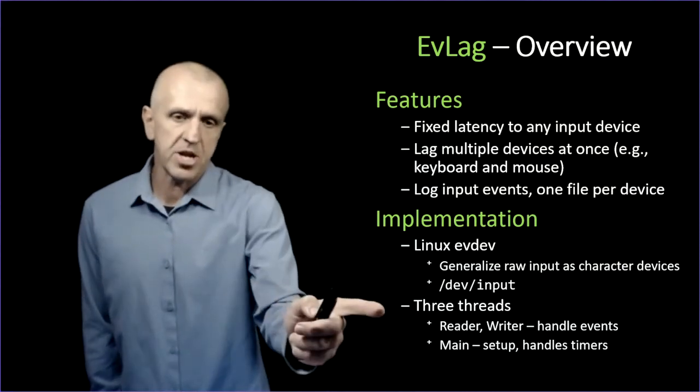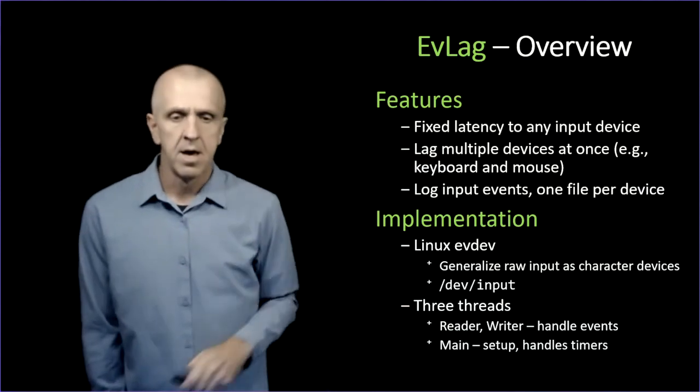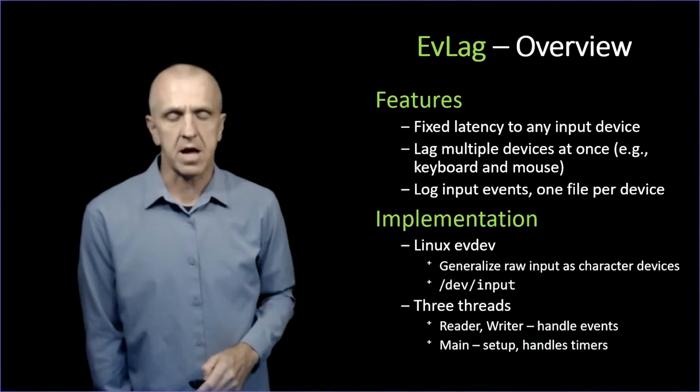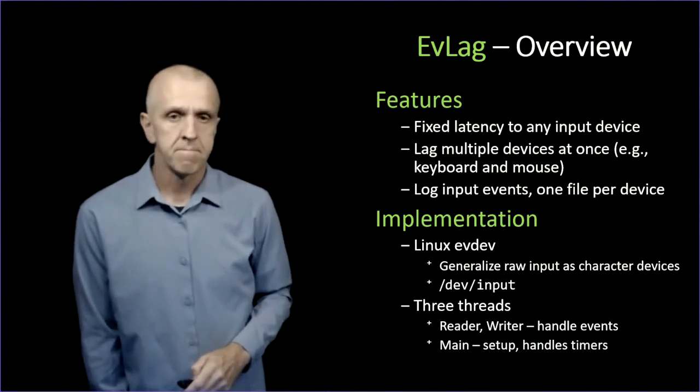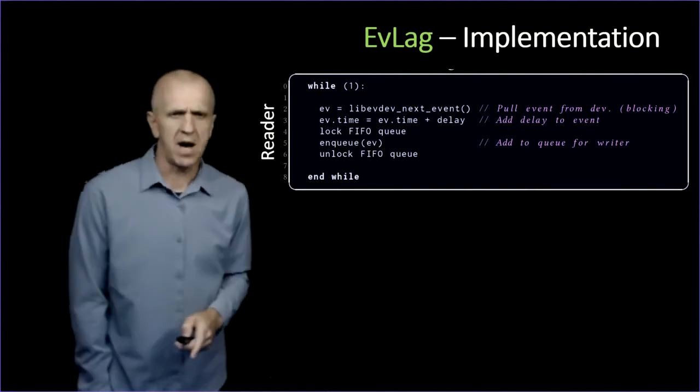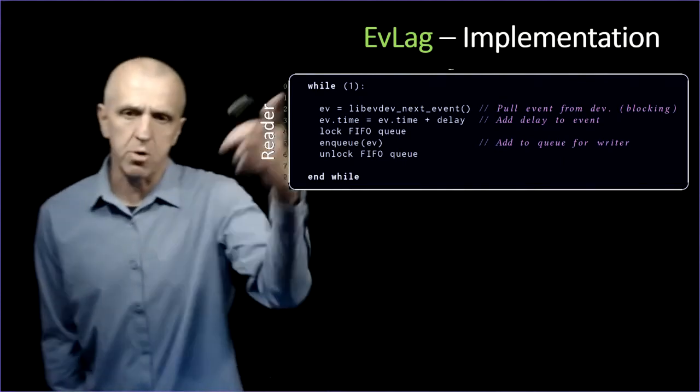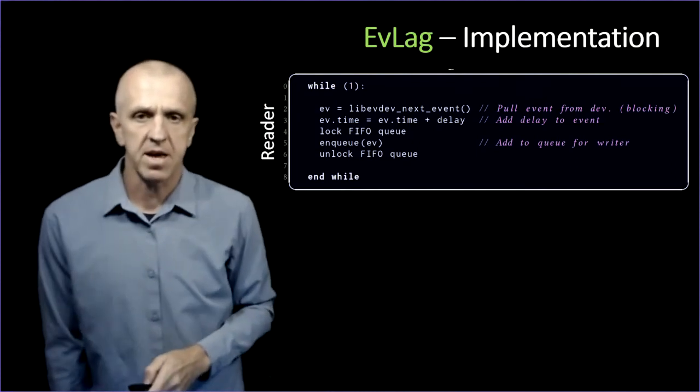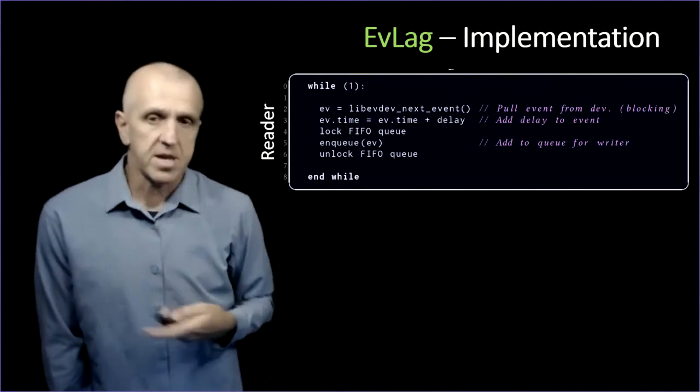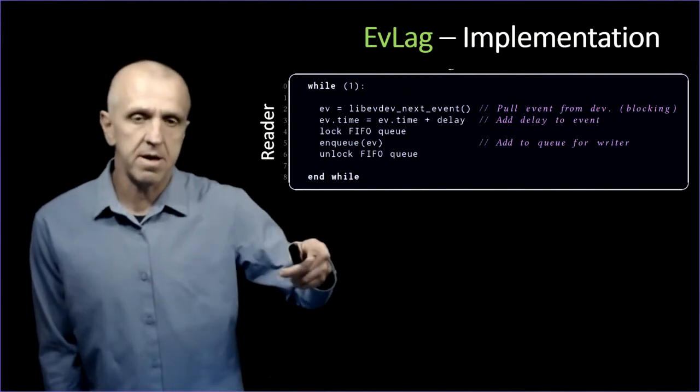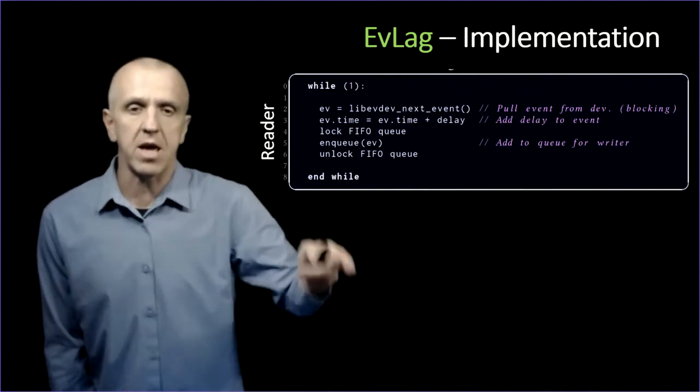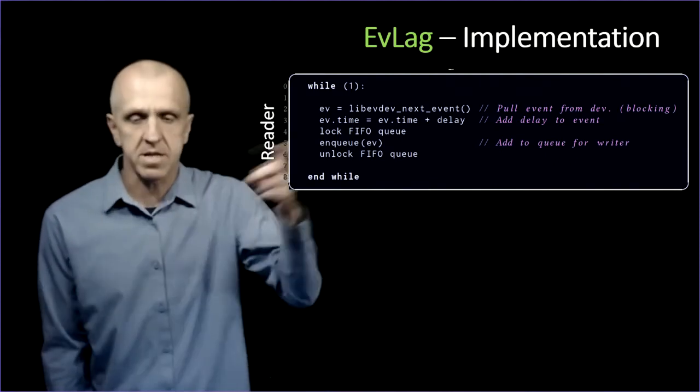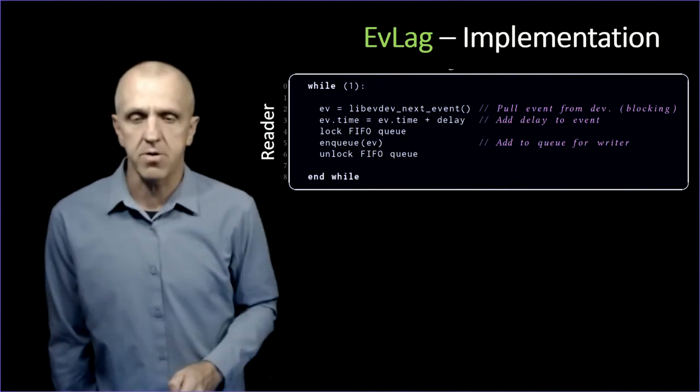The EvLag implementation uses three threads: a reader, a writer, and a main. The reader and writer handle the events, the main handles the timers. This is the reader thread pseudocode. It loops forever. It reads from the device, the EvDev device, gets the event, says what time is it now, what time is the event enqueued, and adds whatever delay you want. It adds the lag to it, puts it in this FIFO queue and repeats. It's basically grabbing the events, adding the necessary lag to it.